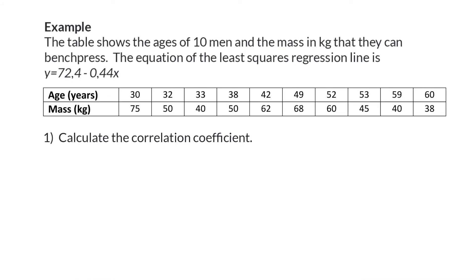Let's have a look at another example. The table shows the ages of 10 men and the mass in kilograms that they can bench press. The equation of the least squares regression line is Y equals 72.4 minus 0.44X. First question: Calculate the correlation coefficient. This correlation coefficient can be determined using your calculator and you will get R is minus 0.39.